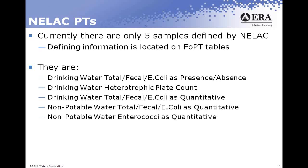On the drinking water table, you'll also find a total, fecal, E. coli quantitative sample. It lists total coliforms, fecal coliforms, and E. coli defined by two different technologies — once for MF and once for MPN each. The PT provider needs to treat those two analytes differently for each technology. The manufacturing range of 20 to 200 CFU/100 mL or MPN/100 mL is listed on the tables. That's all you'll find on the drinking water table.